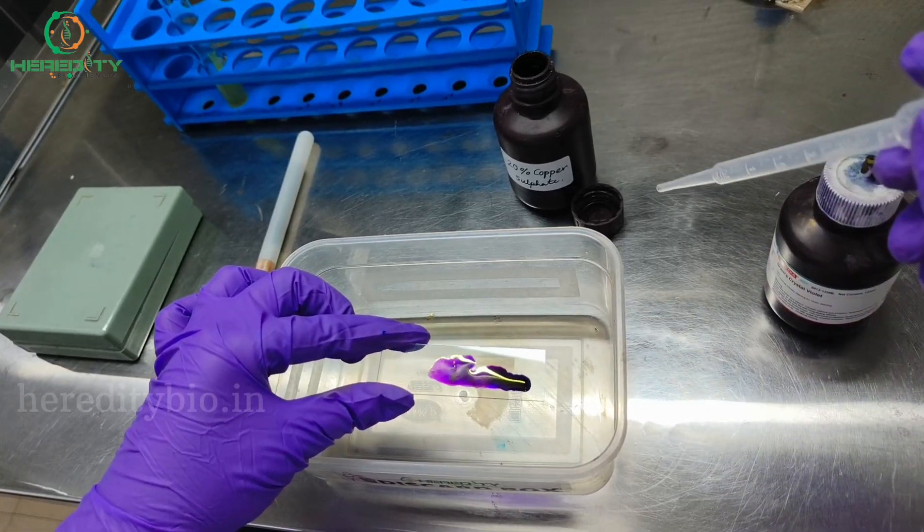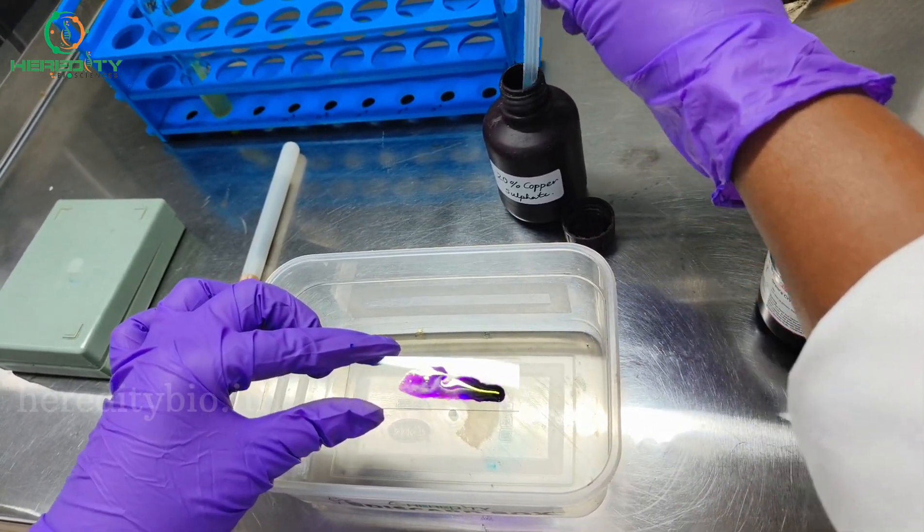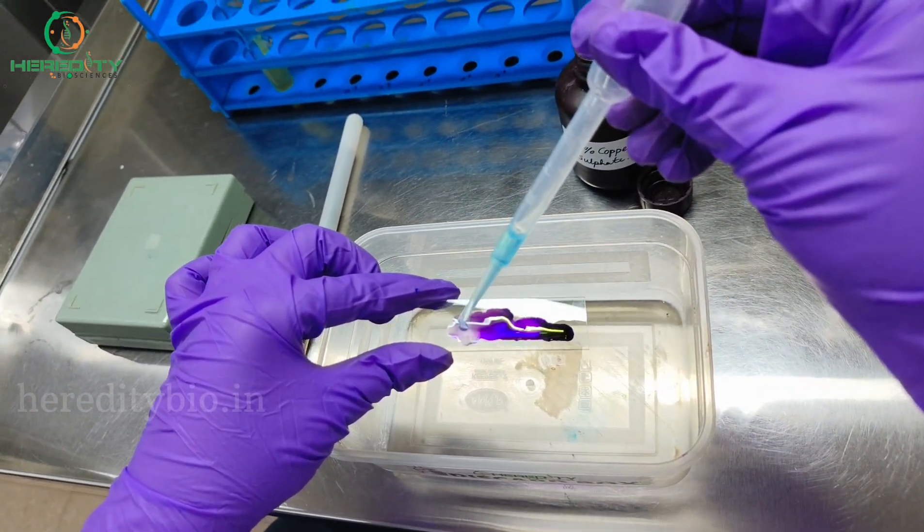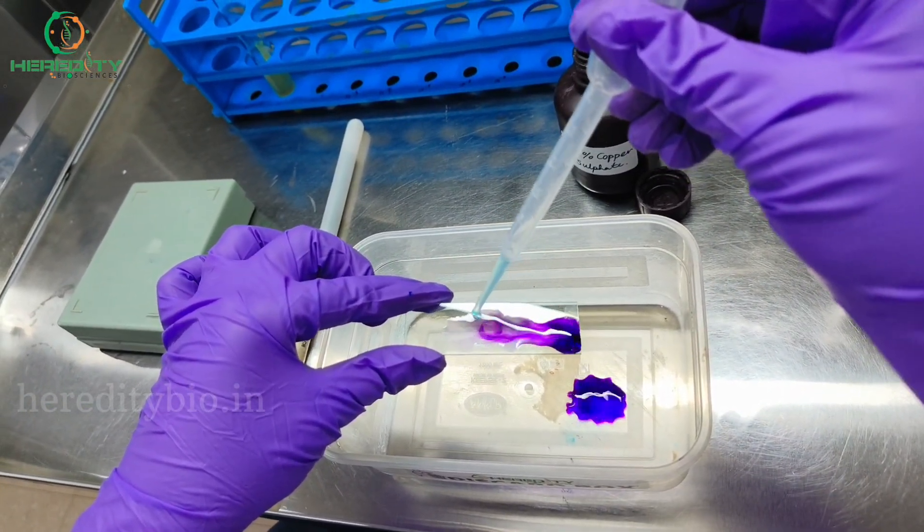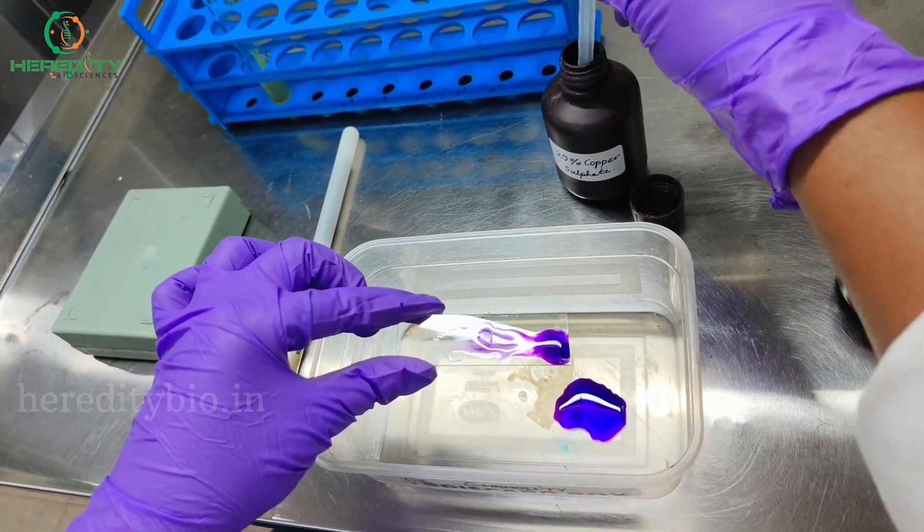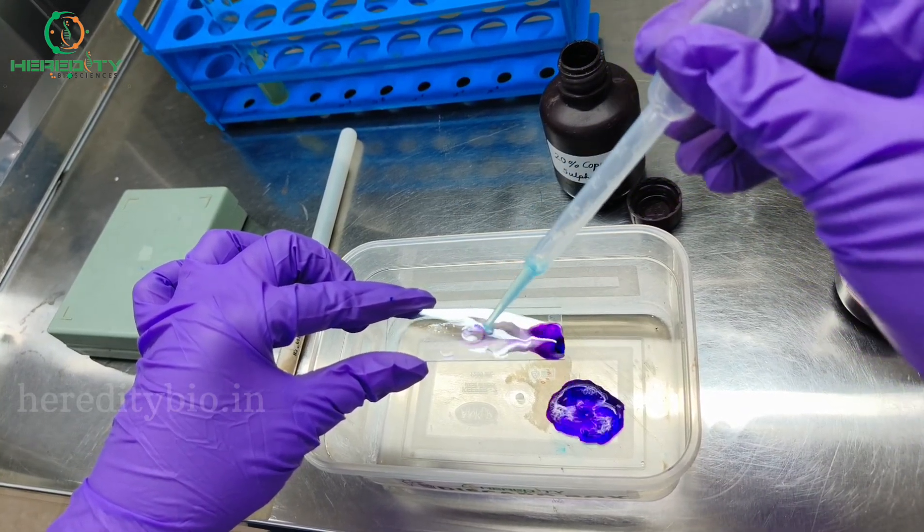After two minutes, wash it out using 20% copper sulfate. Do not use tap water for washing. Do the decolorization until the excess color of crystal violet rinses out.